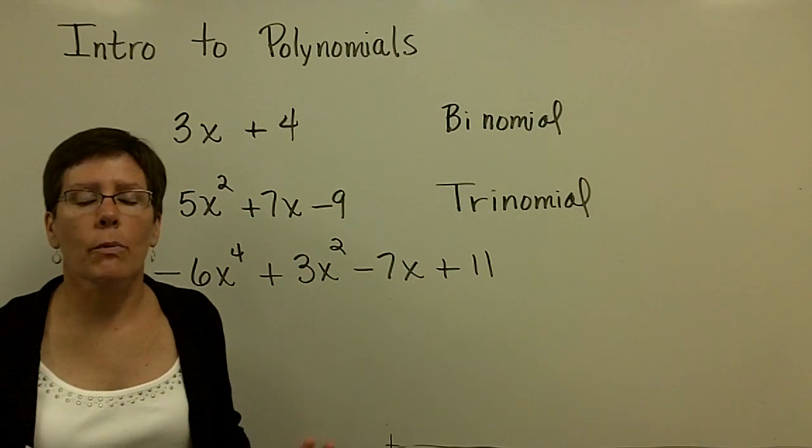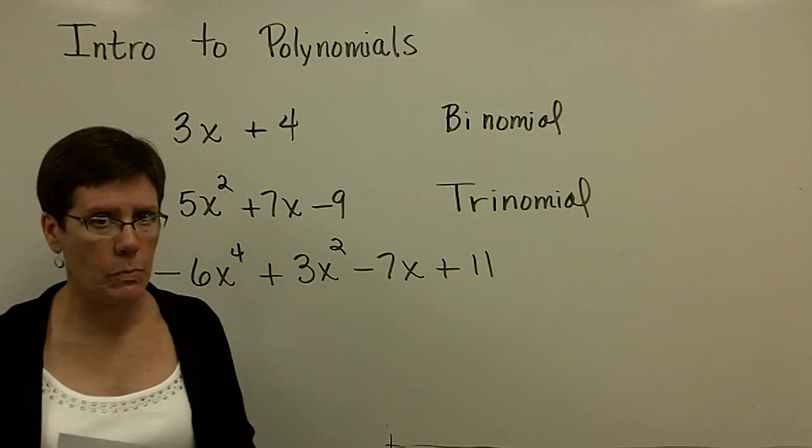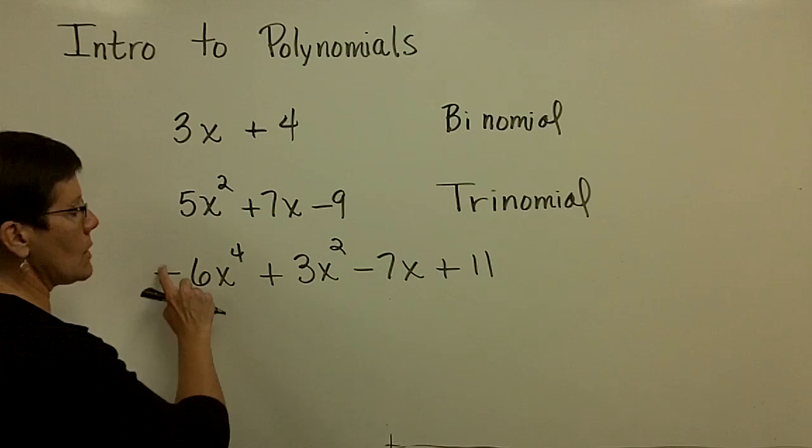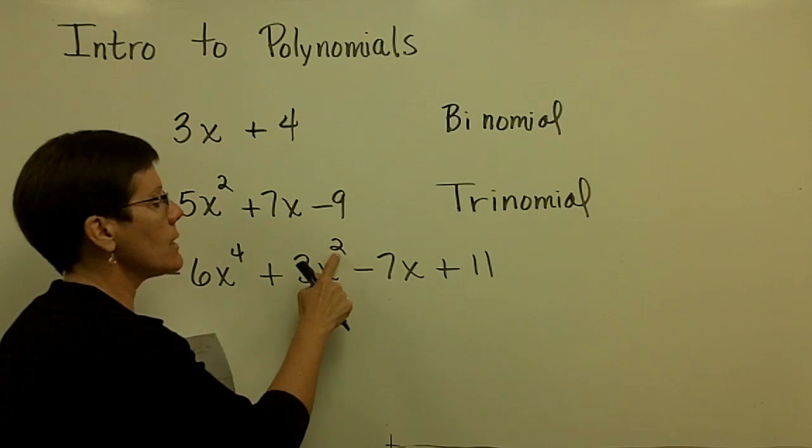I would like you to notice that when we write polynomials, we tend to write them in descending order of the exponent. So would you please notice that this term right here has a 4 for an exponent, and that is the largest. This term right here has a 2.